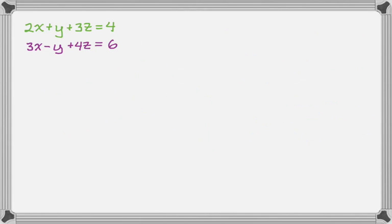Let's take a look at an example. So here are my planes. So I have 2x plus y plus 3z equals 4. And I have 3x minus y plus 4z equals 6.